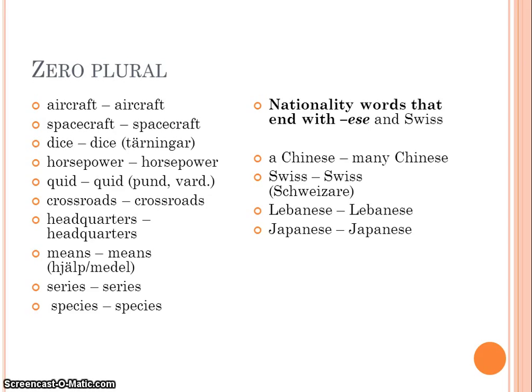Words that also have zero plural are aircraft, spacecraft, dice, horsepower, quid, crossroads, headquarters, means, series, and species.